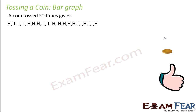Let's say that you have tossed a coin 20 times. Every time you toss a coin, you will get an outcome — you will either get a head or a tail. You tossed it 20 times and the results obtained are as shown on the screen. First time it was a head, then tail, again tail, tail, then head, head, head, and so on. This is how you received outcomes when you tossed the coin 20 times.